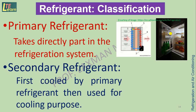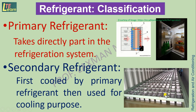Secondary refrigerant is first cooled by primary refrigerant and then used for cooling purposes. For example, in case of an ice plant, water to be converted to ice is kept in ice cans. These ice cans are dipped in brine solution, which is the secondary refrigerant. This brine is first cooled by the ammonia refrigerant in a vapor compression system, and then the brine solution cools the water and converts it into ice.